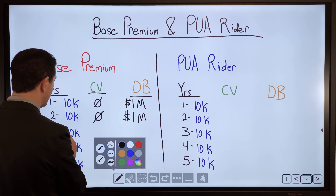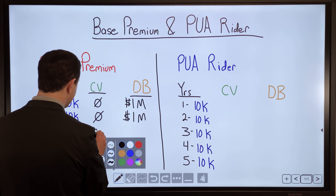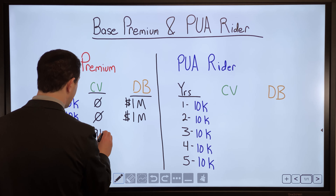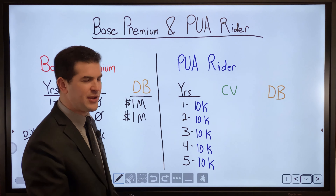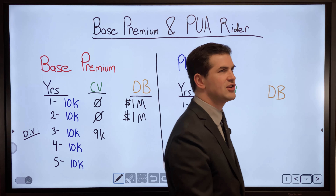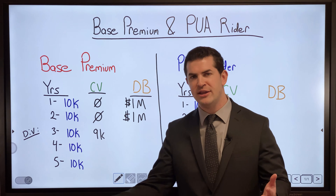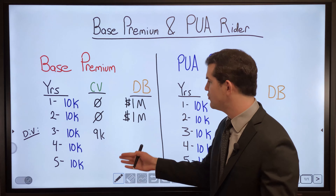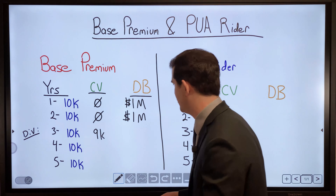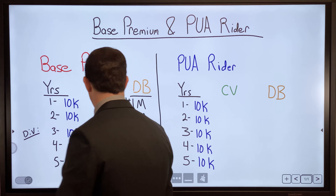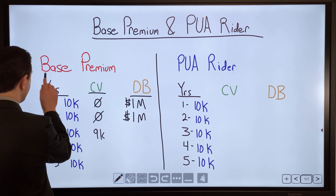By year three, when you make a $10,000 payment, you may see $8,000 to $9,000 of that show up in cash value, depending on the company and product. With some traditional products it might only be $3,000. Dividends are accruing at this time on the base premium only.